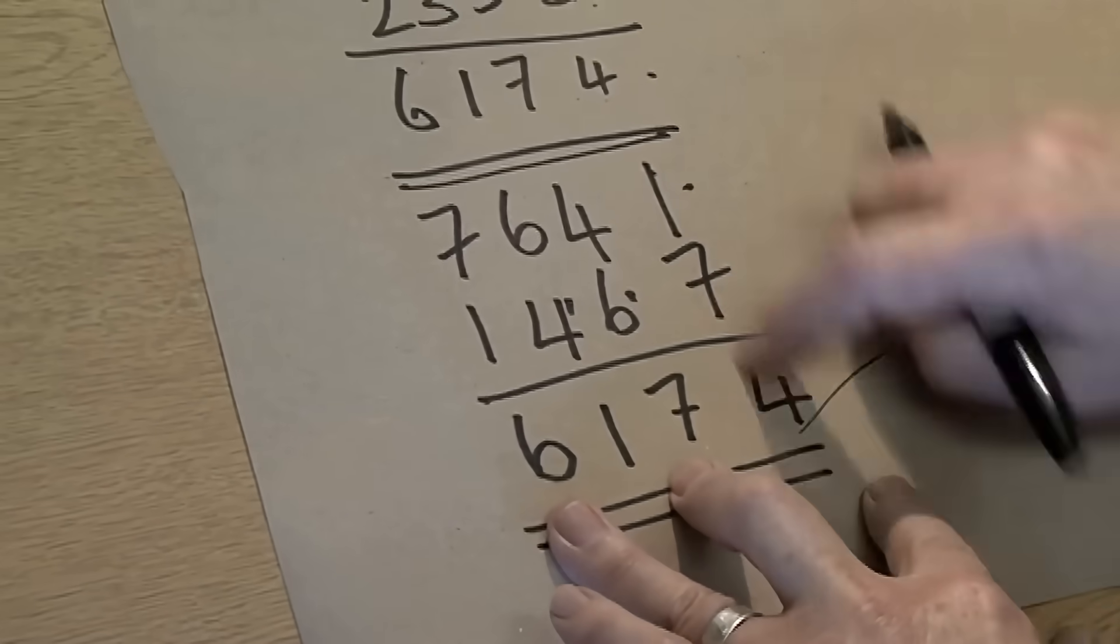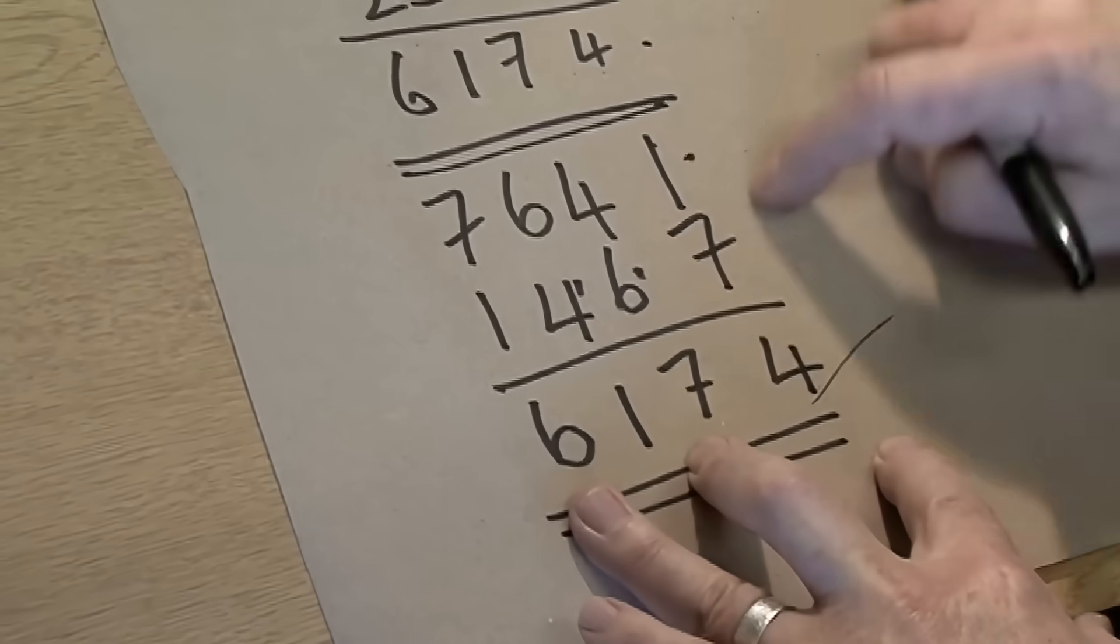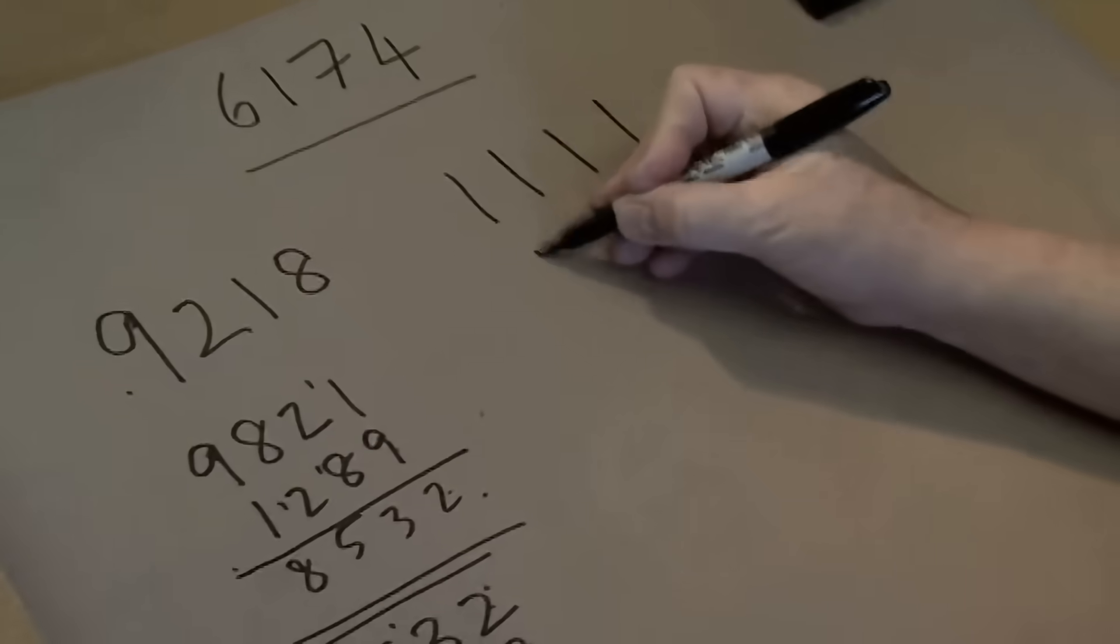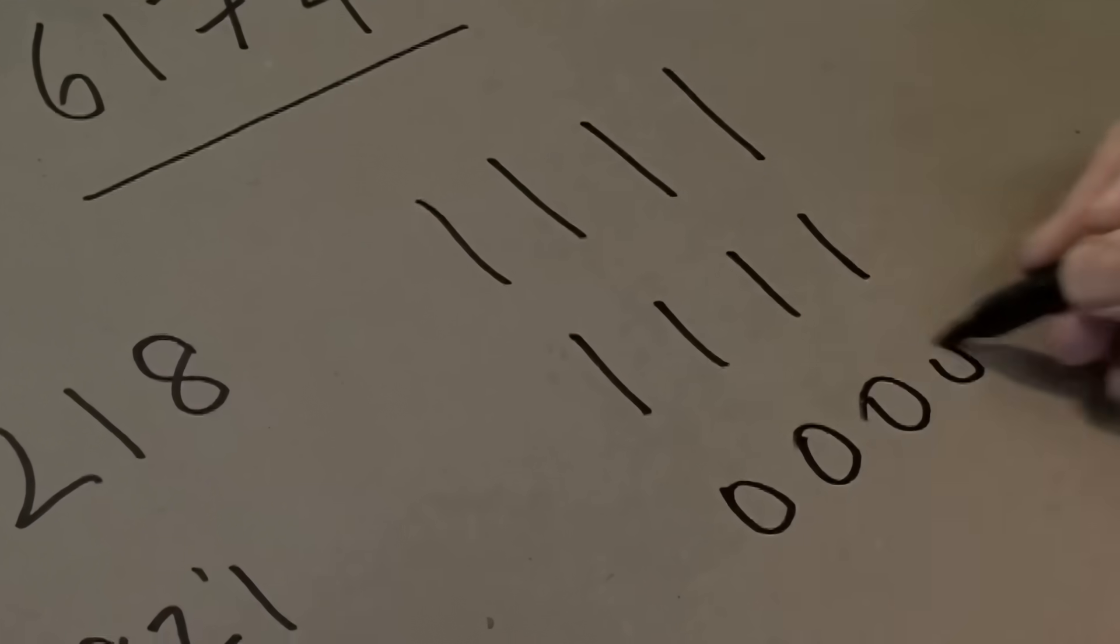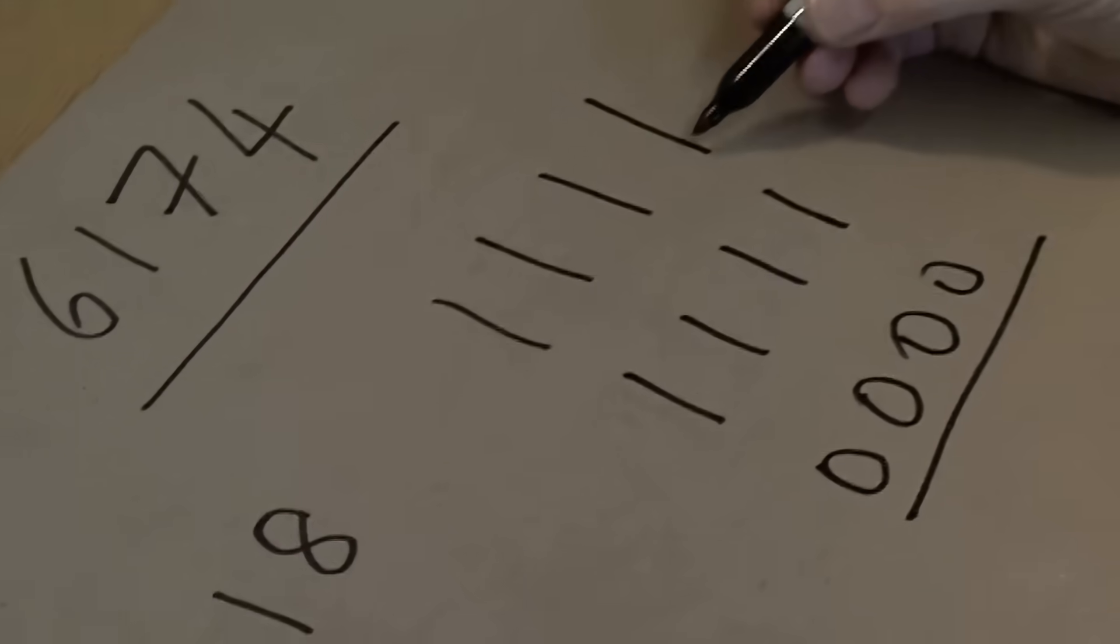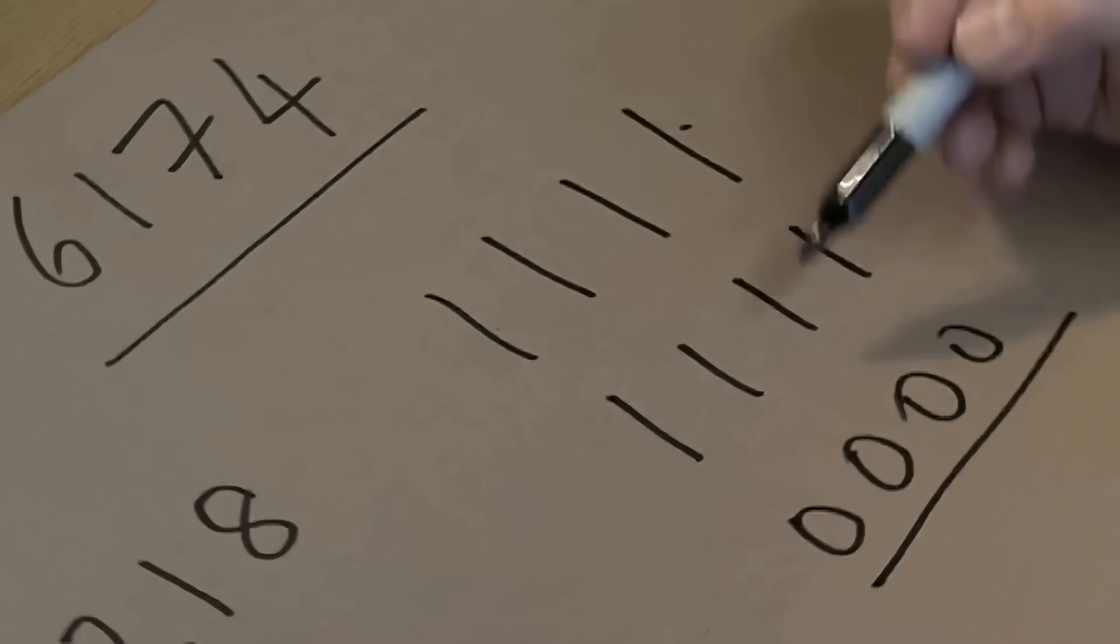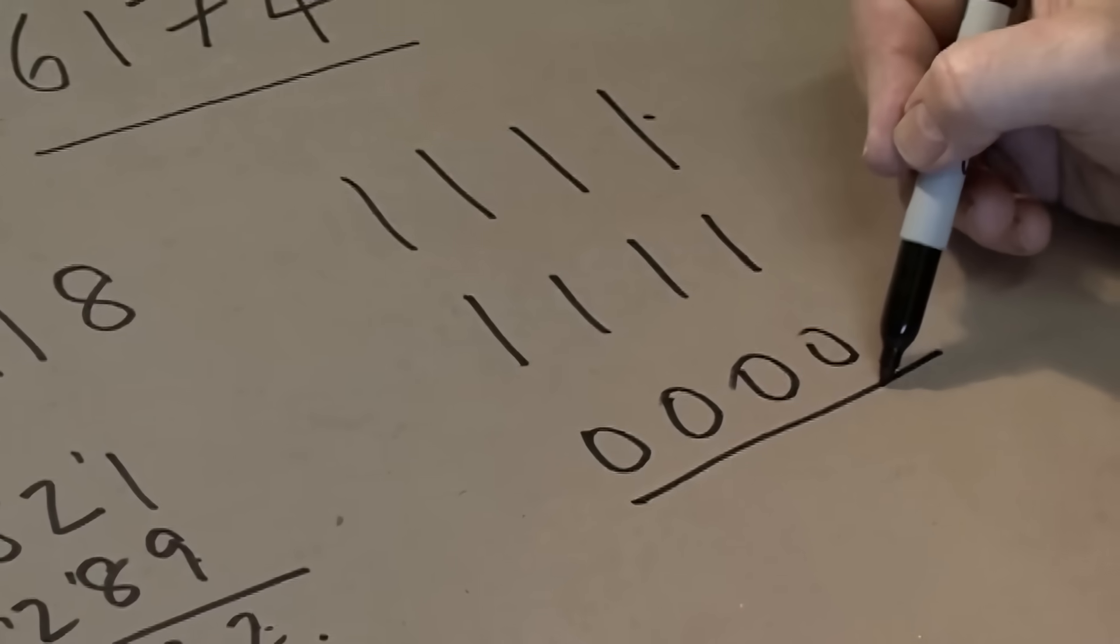You can't have 1111 because if you rearrange that into the other order, you get 0000. It doesn't work if all the numbers here are the same, all 0s, 9s, whatever. That would not work.